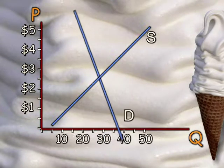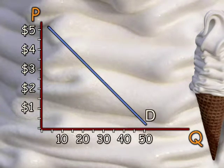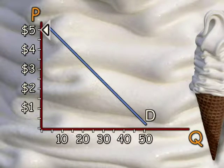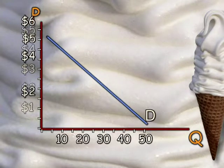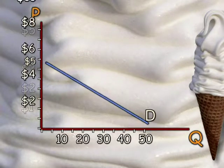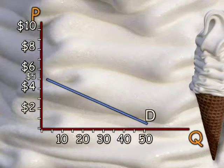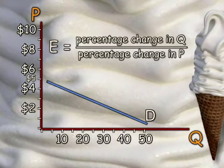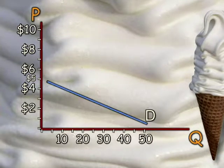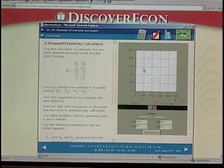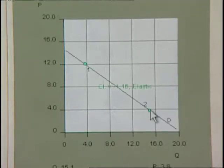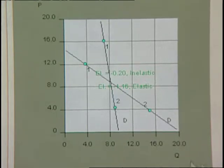Notice, though, that when either schedule slopes and indicates some degree of elasticity, the actual angle depends on the scale. The angle is steeper if a $5 price is higher up, but if we use a scale that puts $5 lower down, the angle is more horizontal. That's why elasticity is always measured in terms of percentages — percentage change in quantity over percentage change in price — a calculation the textbook explains and that the Discover Econ software allows you to practice. The importance of elasticity is how it helps explain the real world.